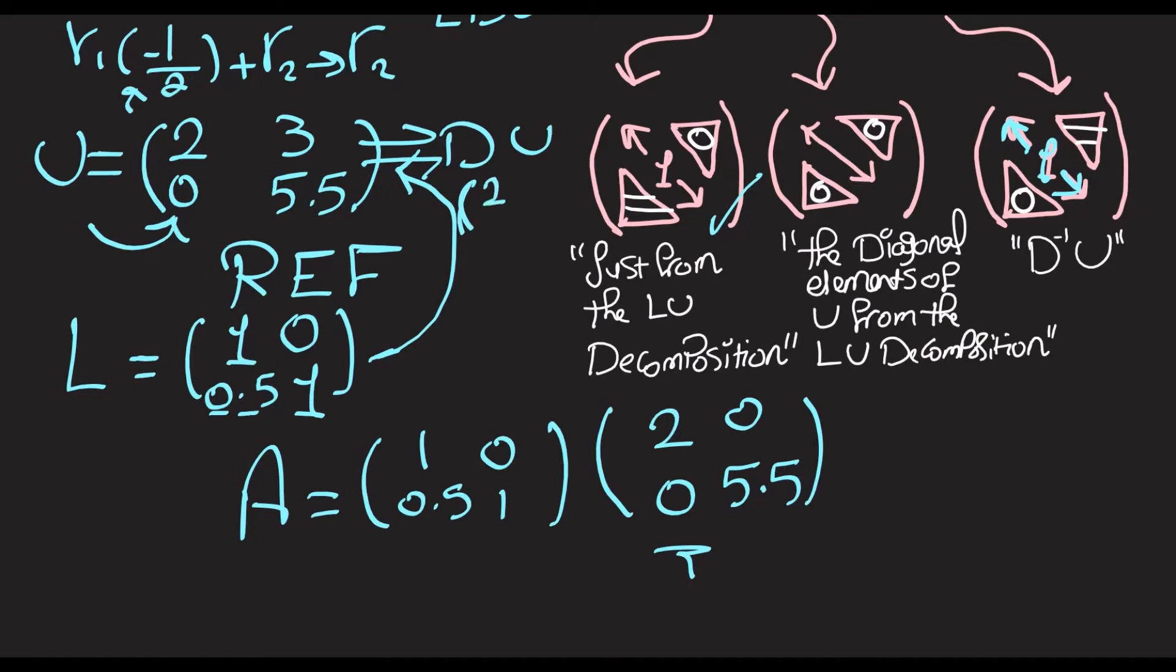So 2, 0, 0, and 5.5. Then U has to be D inverse times U. So we've got to just multiply D inverse by U. And to multiply by D inverse is easy because D inverse is just inverting this 2 and inverting this 5.5.